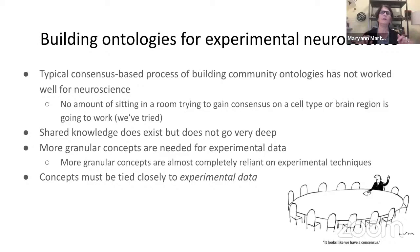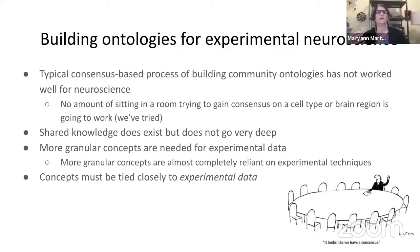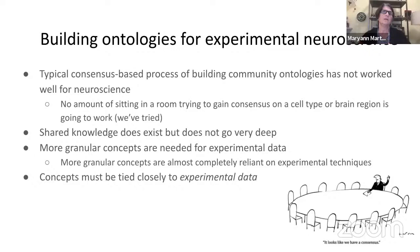So if you're going to take knowledge about a domain and formalize it, it would help that you understood what knowledge you were actually formalizing. What we learned over the years was that the typical approach used for successful ontologies like the gene ontology — getting experts in a room to agree on brain regions and their organization — simply didn't work for neuroscience. No amount of sitting in a room trying to gain consensus on a cell type or brain region is going to work. The knowledge required is just not yet known.